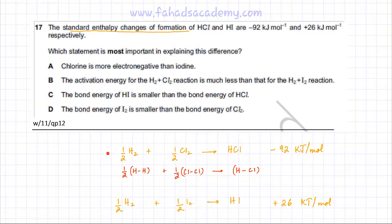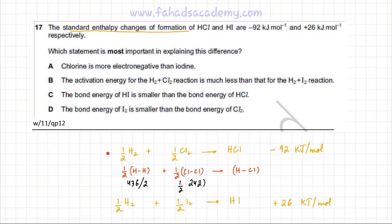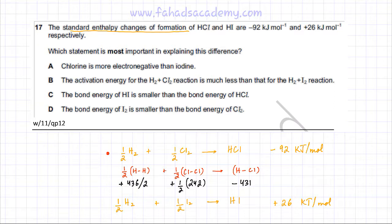The energy needed to break the HH bond is 436 kJ per mole, divided by 2 for half a mole of H2. To break the ClCl bond, it's half of 242 kJ per mole, according to the data booklet. Forming one mole of HCl bonds releases 431 kJ per mole, so that's negative (exothermic). The bond-breaking terms are positive (endothermic).